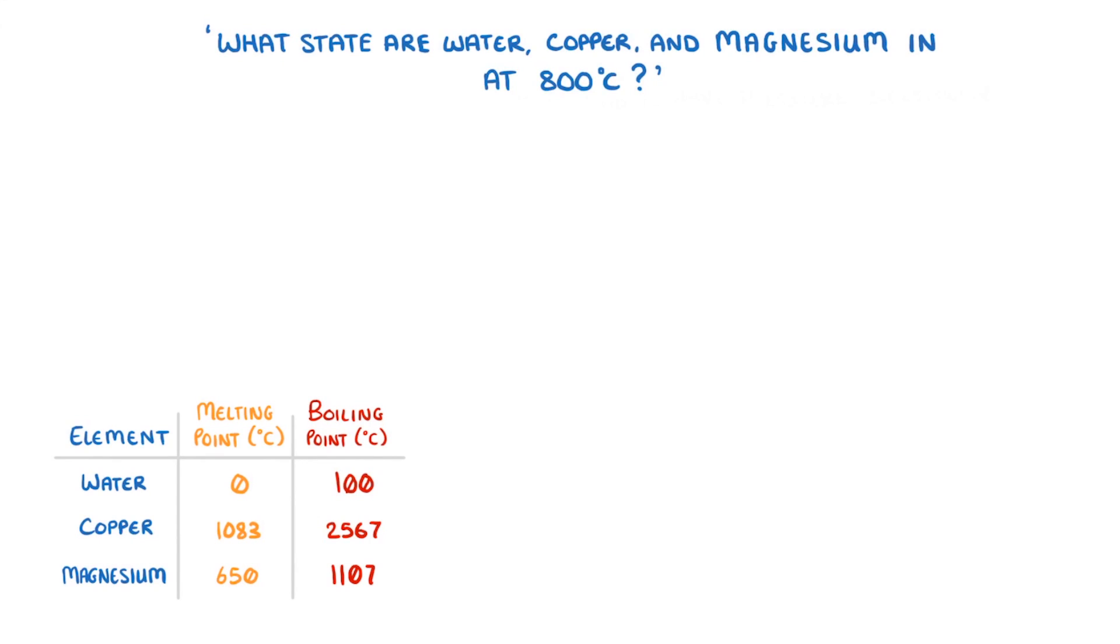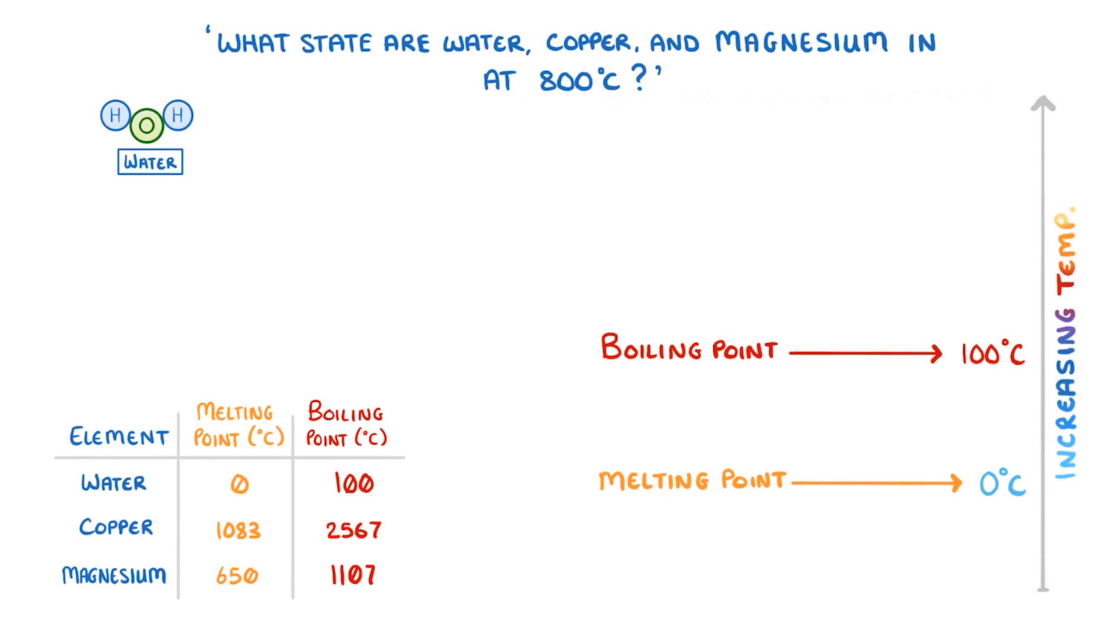One way to conceptualize this is to imagine the temperatures on a number line. So for water we can see that its melting point is 0 degrees, and the boiling point is 100 degrees. So anything below 0 degrees, and the water will be solid ice, because it hasn't melted yet.